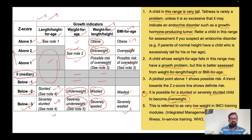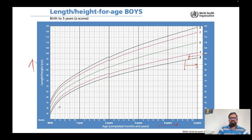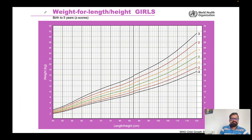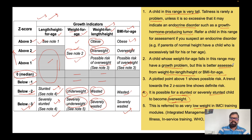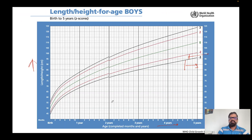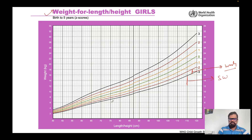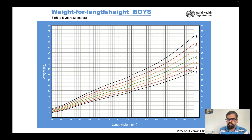Let's go back to the table: below minus two is stunting and below minus three is severely stunting. For weight-for-height: if it falls between minus two and minus three, it is wasting; if it falls below minus three, it is severely wasting. This applies for girls. For boys as well: between minus two and minus three is wasting, and below minus three is severely wasting.